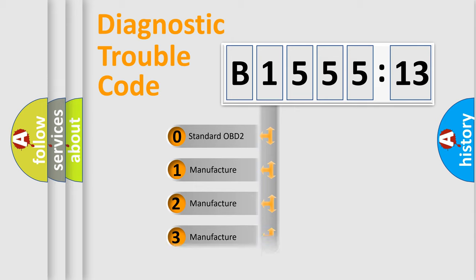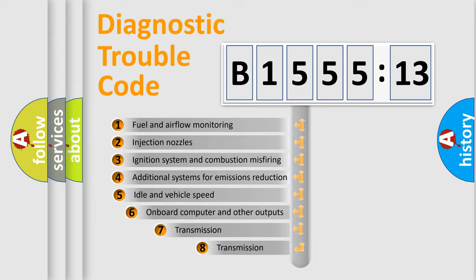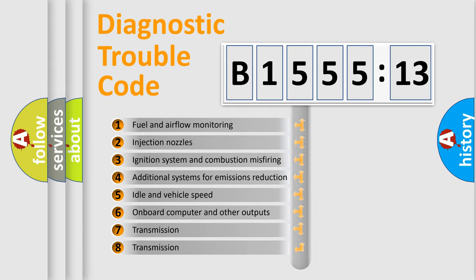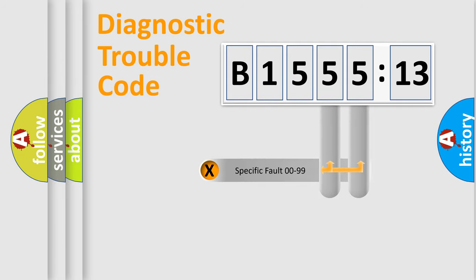If the second character is expressed as zero, it is a standardized error. In the case of numbers 1, 2, or 3, it is a manufacturer-specific expression of the car-specific error. The third character specifies a subset of errors. The distribution shown is valid only for the standardized DTC code.